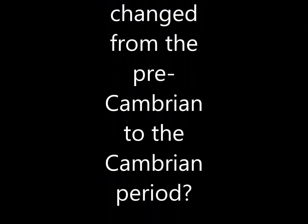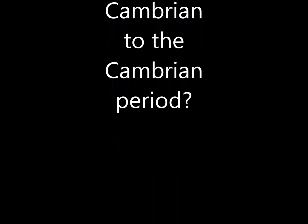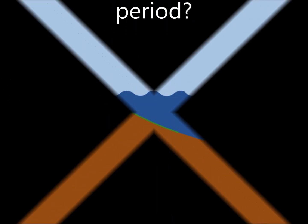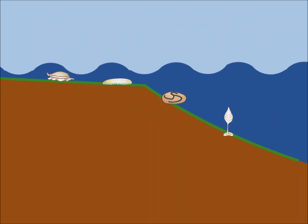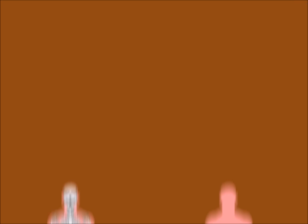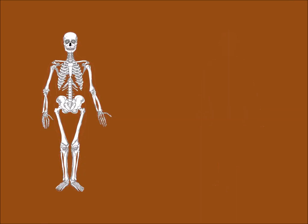What changed from the pre-Cambrian to the Cambrian period? By the base of the Cambrian, life on Earth had not evolved past a few basic body plans, which all lived in shelf environments. Most of the fossilised animals from this period lacked skeletons, which may indicate that diverse animal life forms were present in the pre-Cambrian but were simply not preserved in the fossil record.